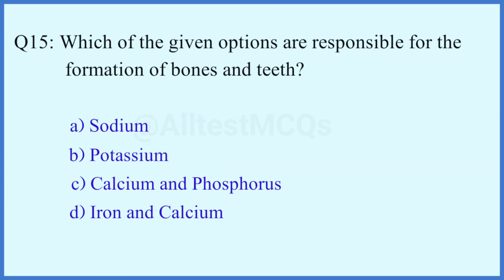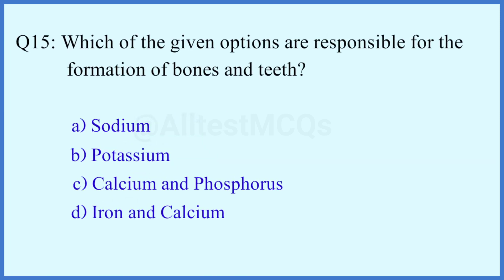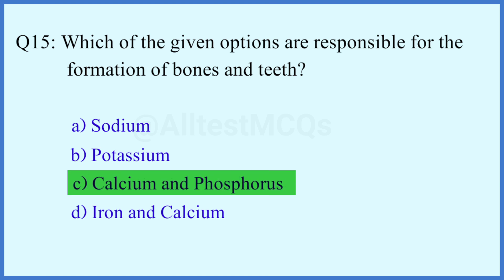Question number 15. Which of the given options are responsible for the formation of bone and teeth? The right answer is option C: Calcium and phosphorus.